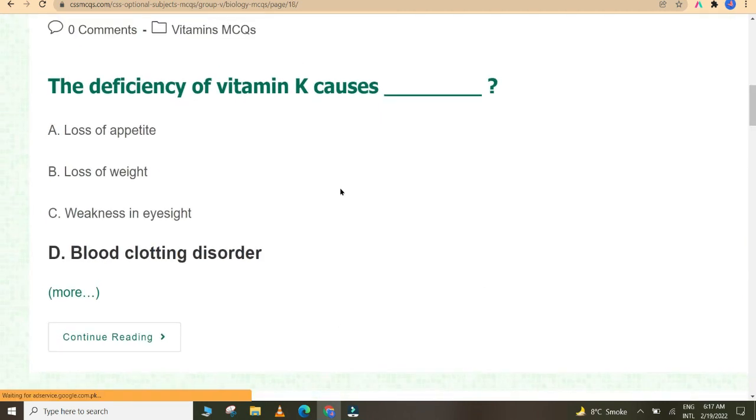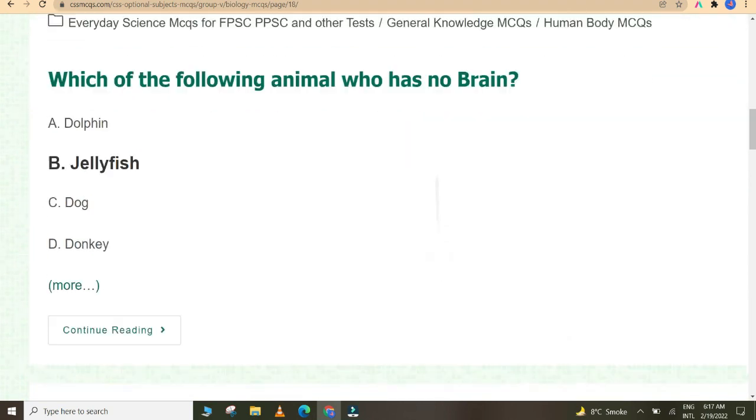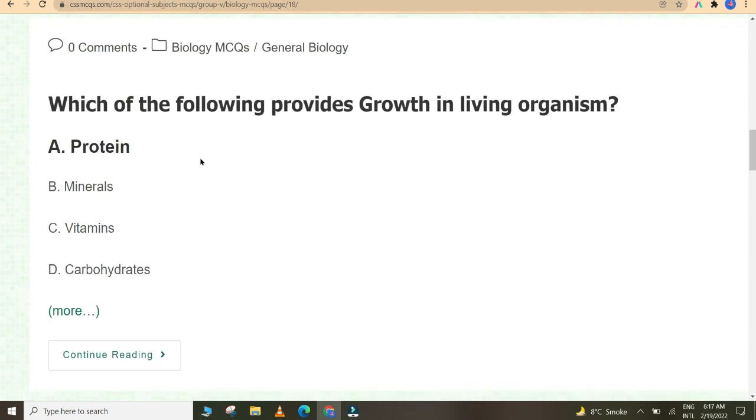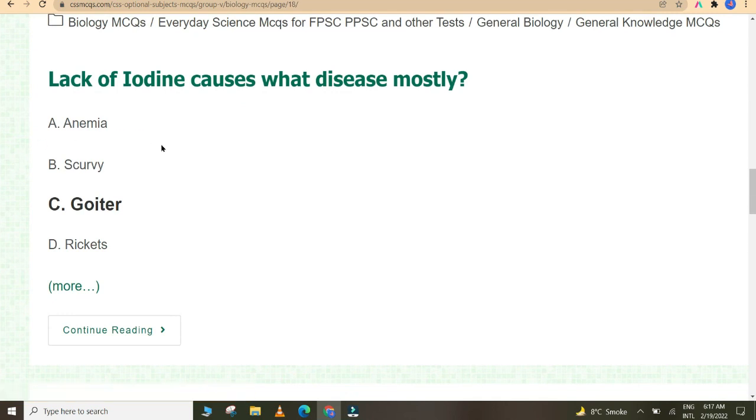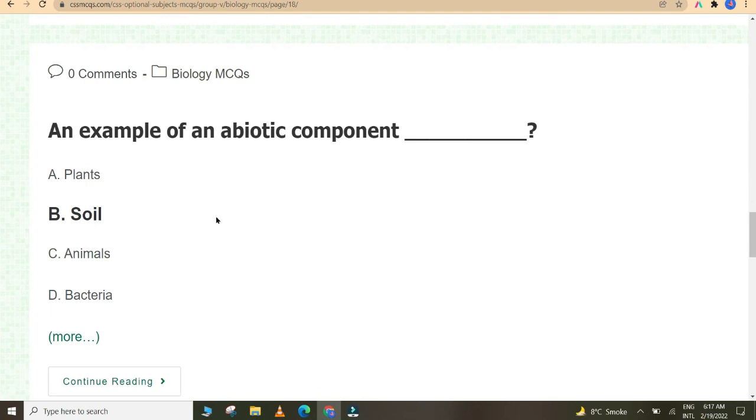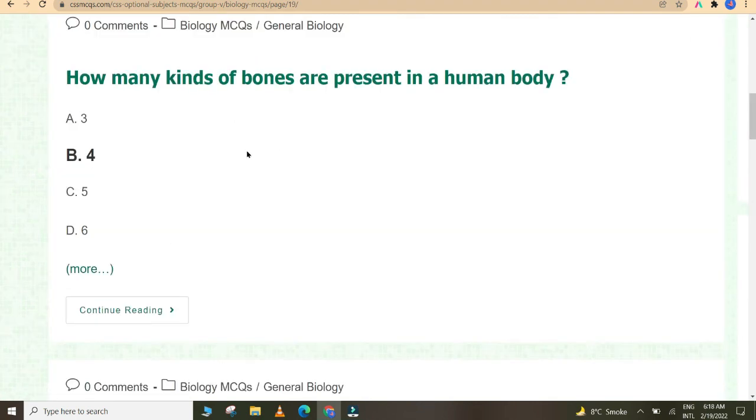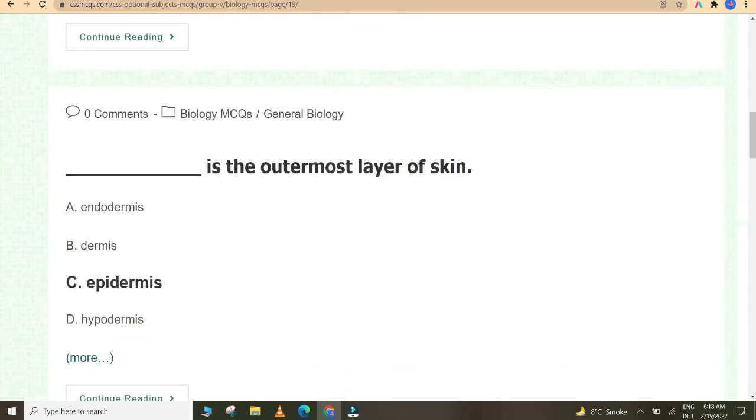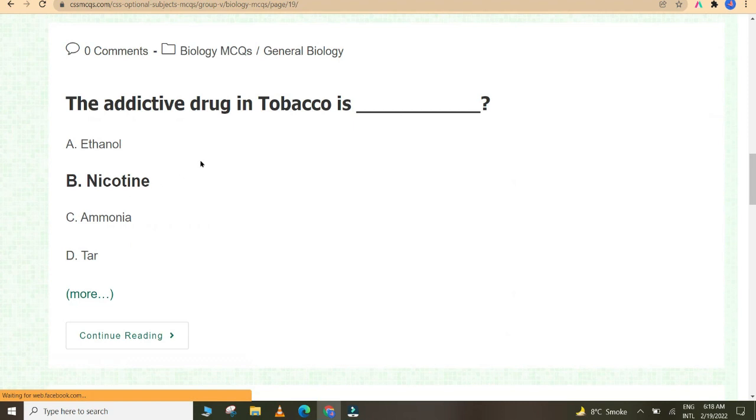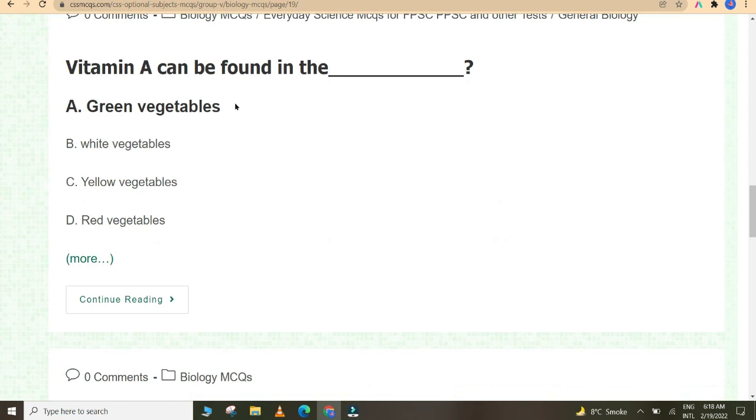The graveyard of red blood cells is known as spleen. The deficiency of vitamin K causes blood clotting disorder. Which of the following animal has no brain? Jellyfish. Which of the following provides growth in living organism? Protein. Lack of iodine causes what disease mostly? Goiter. Malaria is caused by mosquito. An example of an abiotic component is soil. How many kinds of bones are present in human body? Four.